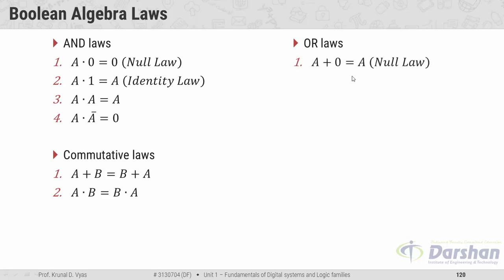In OR laws, the first one is: A OR 0 is always A. We can verify: zero OR zero is zero, and one OR zero is one, so we always get A as output.